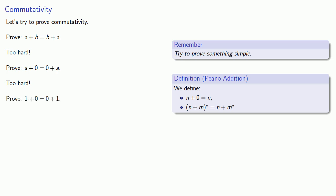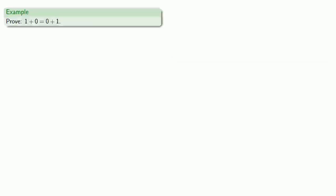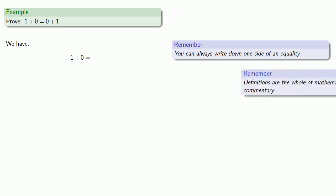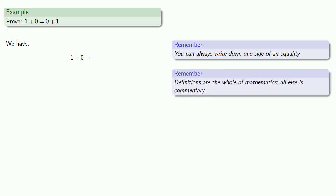That also turns out to be a little too hard, so let's try something easy. Let's try to prove that one plus zero is equal to zero plus one. This is a specific case, and as we saw, it might be possible to generalize from the proof of a single instance. You can always write down one side of an equality, so let's write down one plus zero equals. Definitions are the whole of mathematics — all else is commentary. So let's pull in our definition of addition.